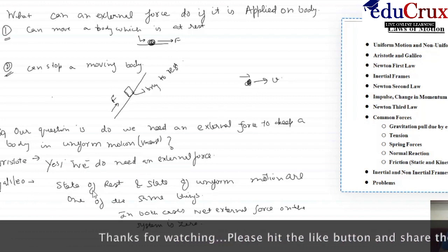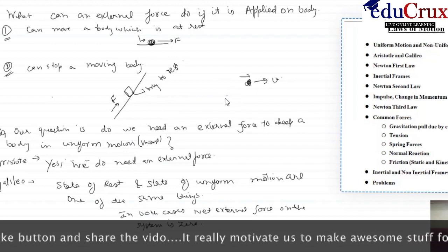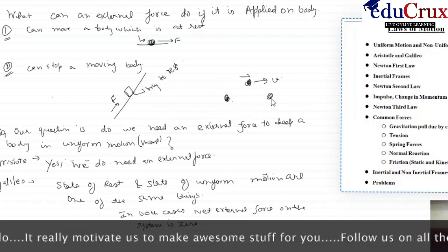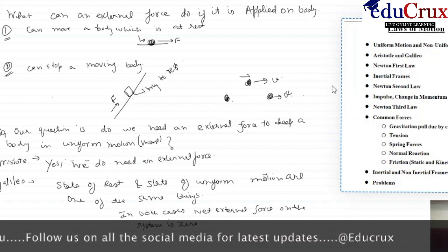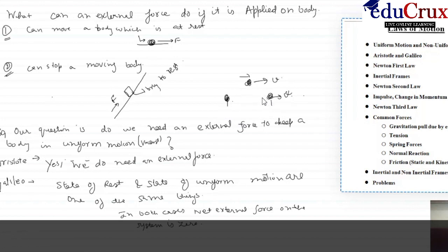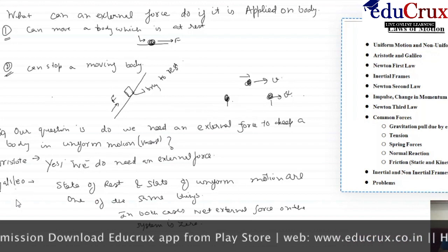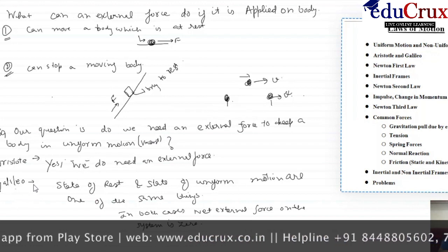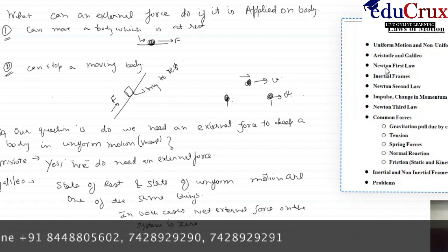Galileo proved experimentally that a state of rest and a state of uniform motion are one and the same thing. If I have a ball at rest and a ball moving with a constant velocity v in the same direction, according to Galileo, in both cases the net external force on the body is equal to zero. This point of view of Galileo inspired Newton to introduce the first law of motion, and we will begin our study of Newton's laws by studying the first law of motion.